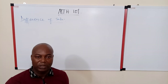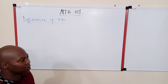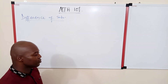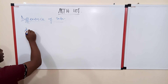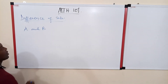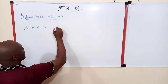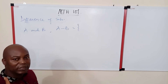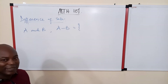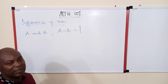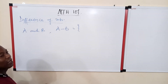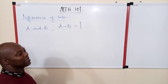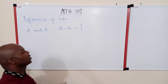Let's use some examples to illustrate what the difference of a set is, but before I do that let me quickly make a statement. The set difference of two sets, say A and B, written as A minus B, is a new set that contains all the elements in A that are not in B.